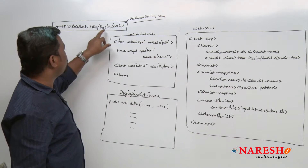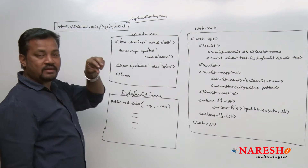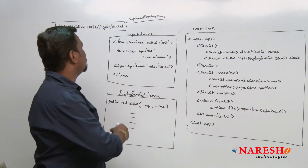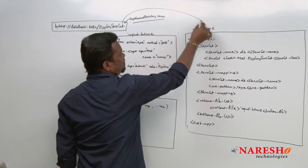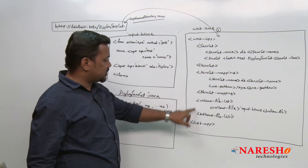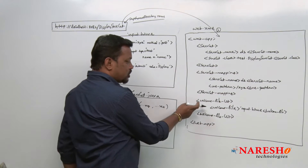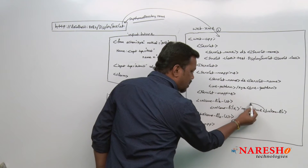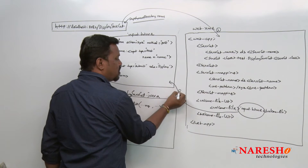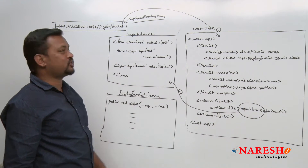When it is available from localhost, look for my deployment directory or web application name as DisplayServlet. When this DisplayServlet has been identified or deployed, the control comes to web.xml. In this web.xml, we have three tags. The control goes to the welcome file list, and in that welcome file list tag, we have the welcome file — input.html file. The control comes to input.html and this will be displayed, where the user enters some name.